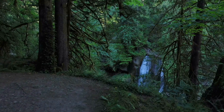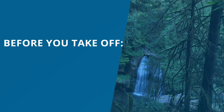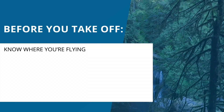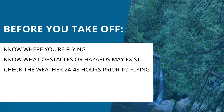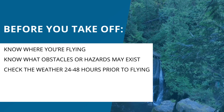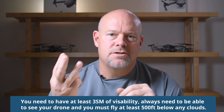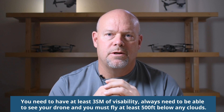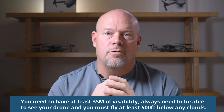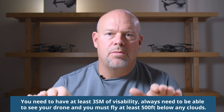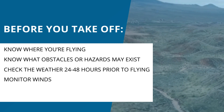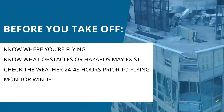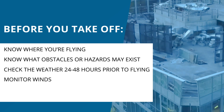Before launching your drone, there are a few things you should have on a checklist to accomplish before every flight. Know where you'll be flying and what obstacles or hazards might exist. Watch the weather starting 24 to 48 hours before you plan to fly. You need at least three statute miles of visibility, you must always be able to see your drone, and you must fly at least 500 feet below any clouds. Also monitor winds — the Mini SE can hover in 22 mile per hour winds according to DJI, but use caution as speeds approach that limit.